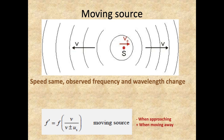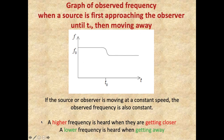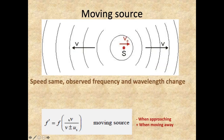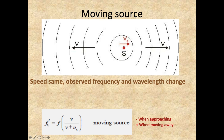A higher frequency is heard when source and observer are getting closer; a lower frequency when moving away. When the source is getting closer, the source speed is in the denominator, either added to or subtracted from the speed of the wave. The plus version makes the denominator larger than the numerator, so the ratio is less than 1 — the observed frequency is less than emitted, meaning moving away. The minus version is used when the source is approaching: the denominator is smaller than the numerator, the ratio exceeds 1, and the observed frequency is higher than emitted.